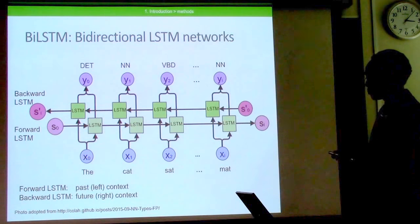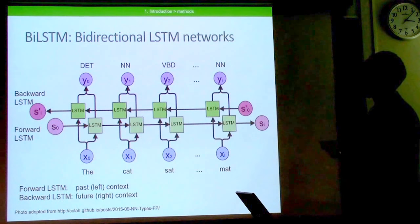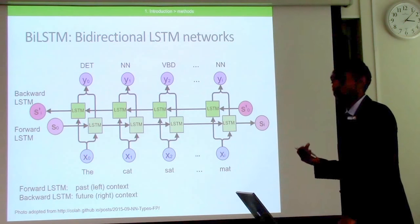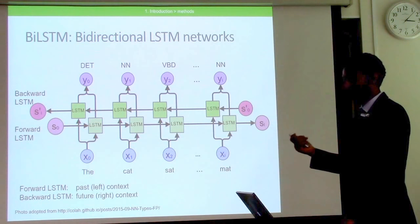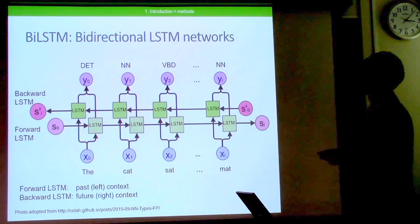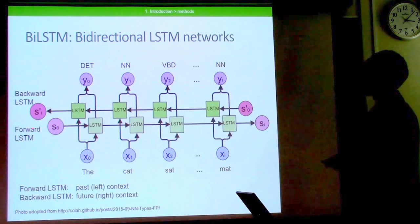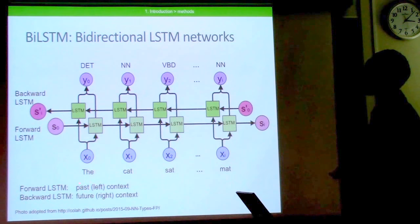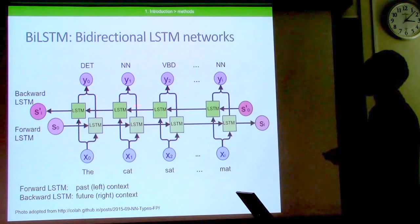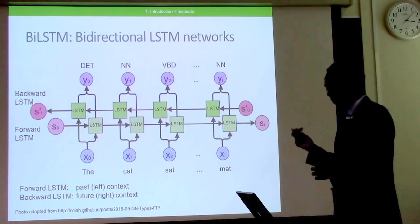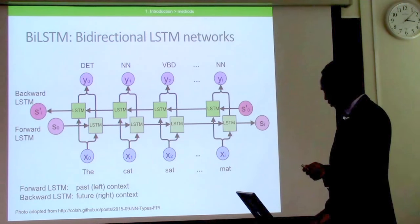In addition to standard LSTMs, in Tigrinya some words can be correctly disambiguated by looking at future information. For this, we adapted bidirectional LSTM networks. In addition to the regular forward path capturing past or left context, there is also a reverse traversal capturing the future or right context in a sentence. We applied bidirectional LSTM networks for this purpose.